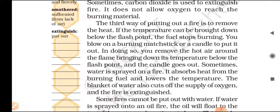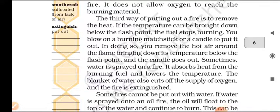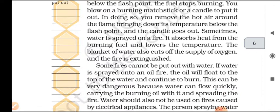If the temperature can be brought down below the flash point, the fuel stops burning. You blow on a burning matchstick or a candle to put it out — in doing so you remove the hot air around the flame, bringing down its temperature below the flash point and the candle goes out. Sometimes water is sprayed on a fire; it absorbs heat from the burning fuel and lowers the temperature. The blanket of water also cuts off the oxygen supply and the fire is extinguished.